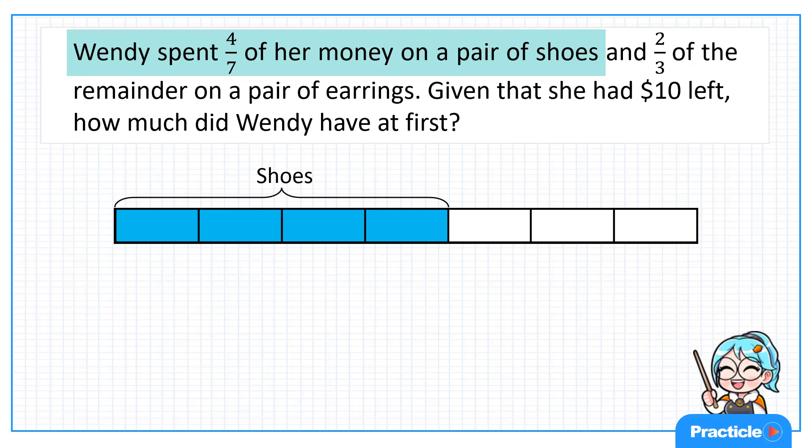Then what else did Wendy do? Wendy spent two-thirds of the remainder on a pair of earrings. Do you see the word remainder?